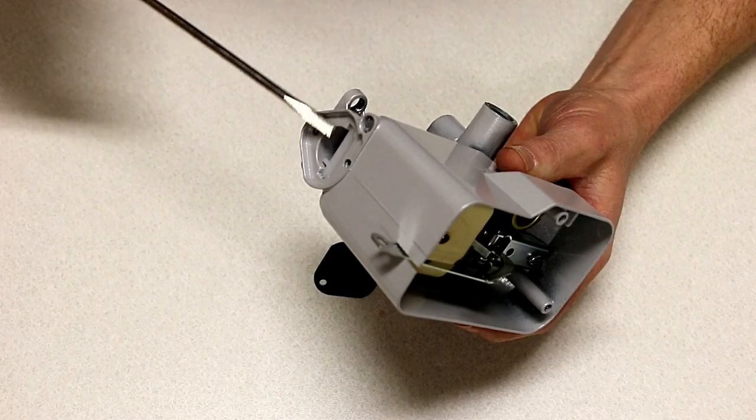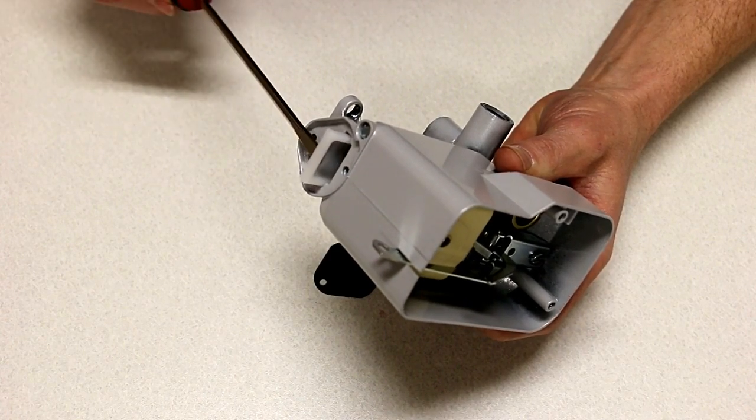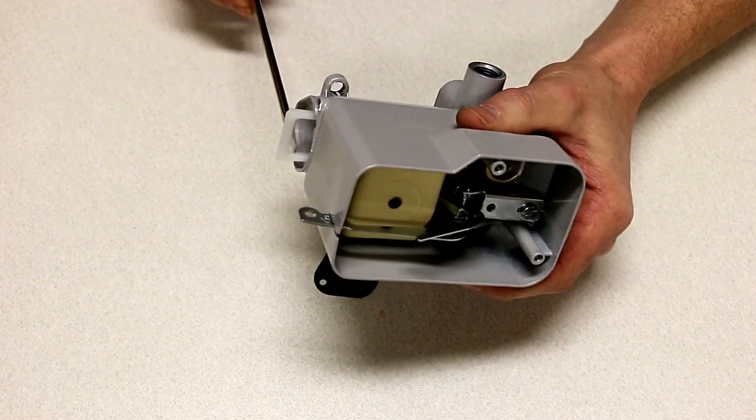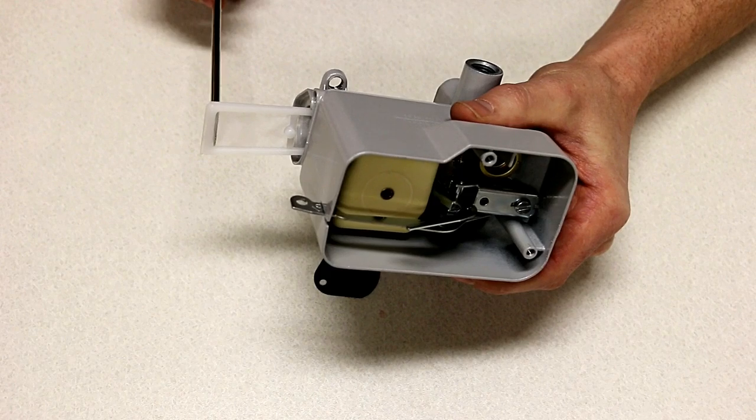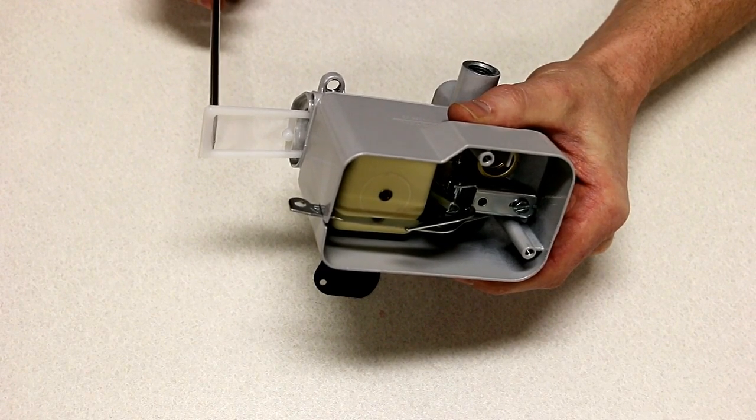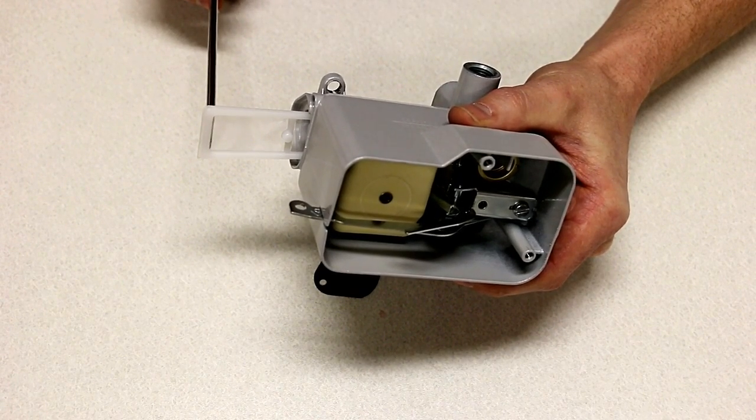Take a screwdriver and just gently pry on that filter and it will come out. That filter is reusable. You can take that over to the sink, rinse it out, dry it off thoroughly and put it right back in.